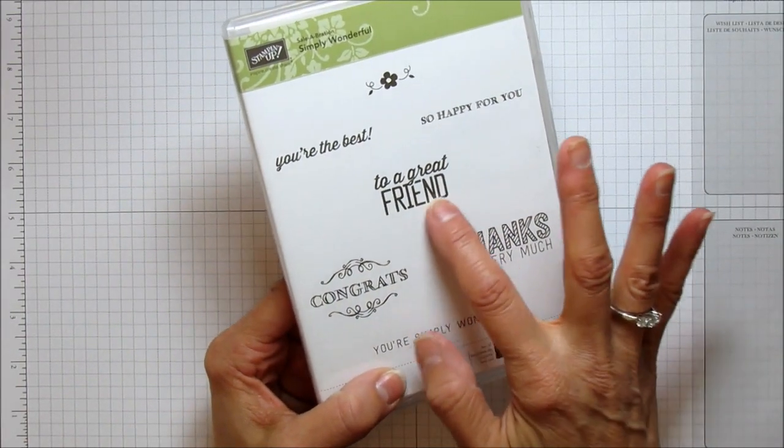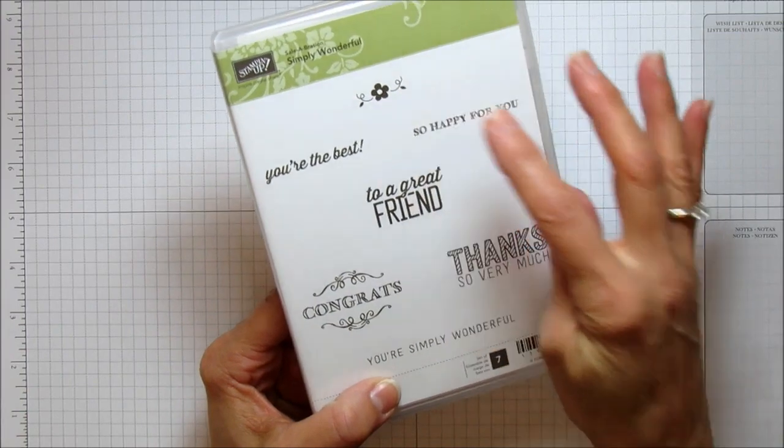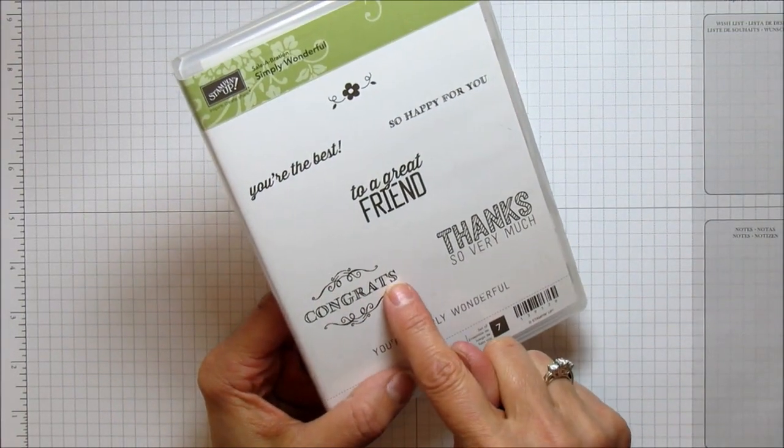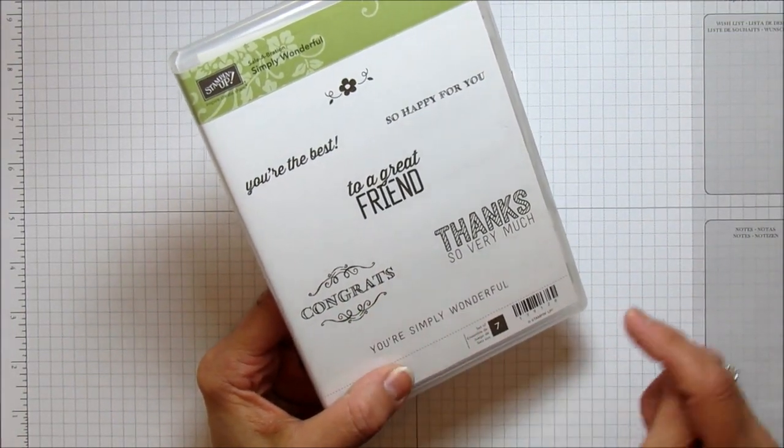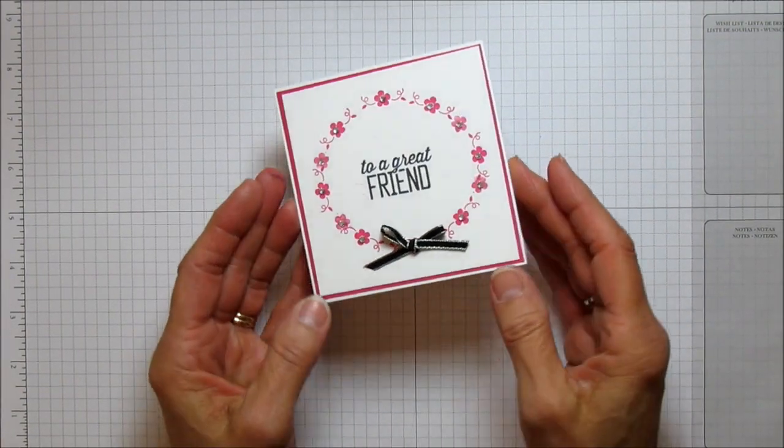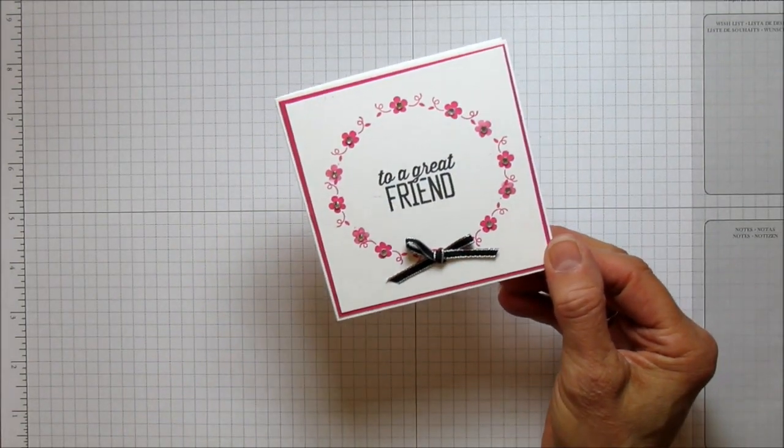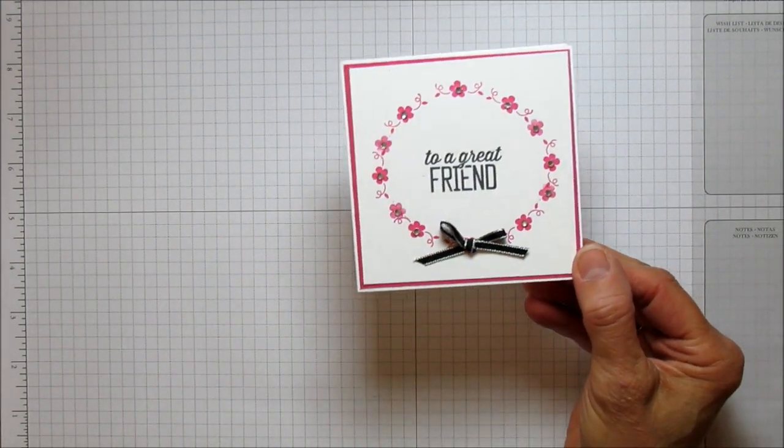This is the stamp set I'm using: the 'to a great friend' sentiment and this little flower. You can even put 'congrats' in the center—I think that would be really cute too. This one is done in Melon Mambo and it has a little technique to it.